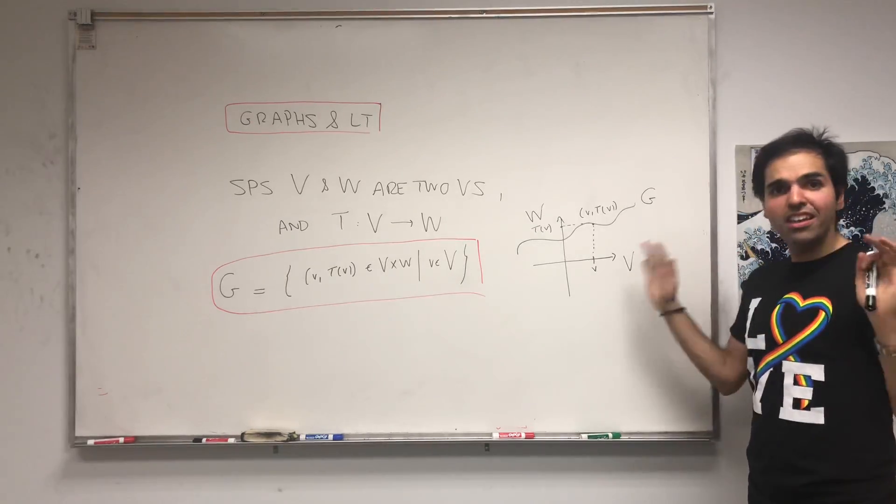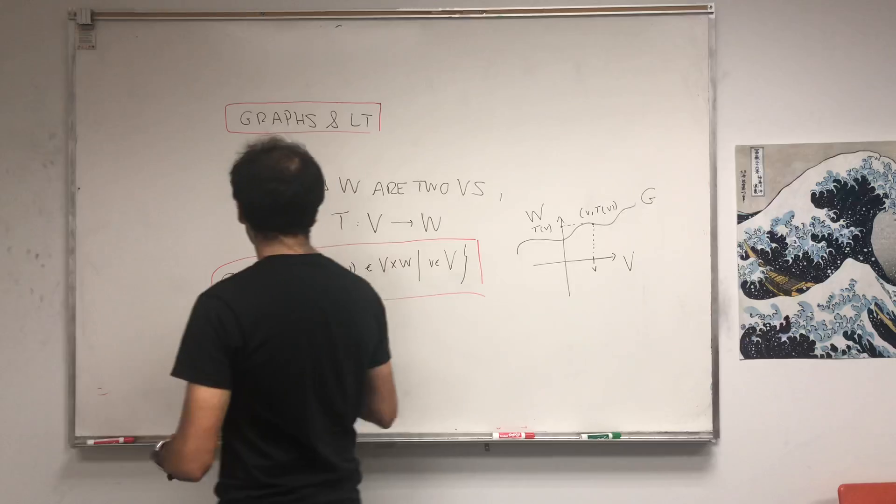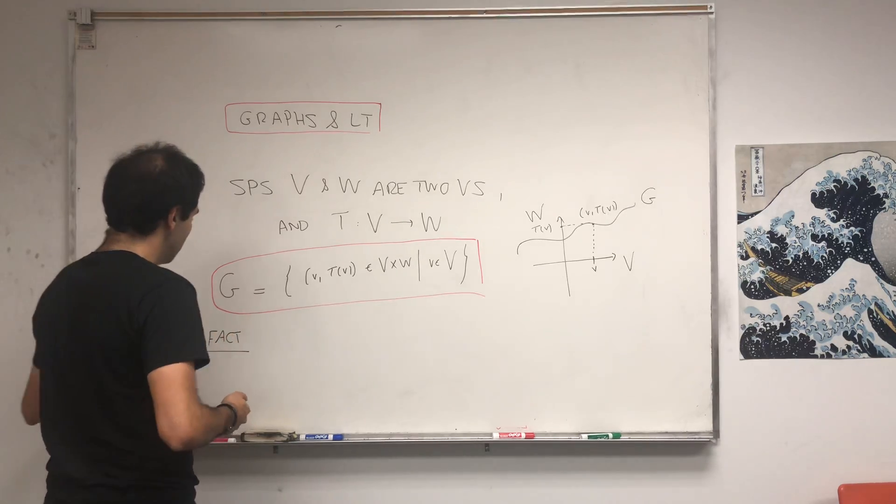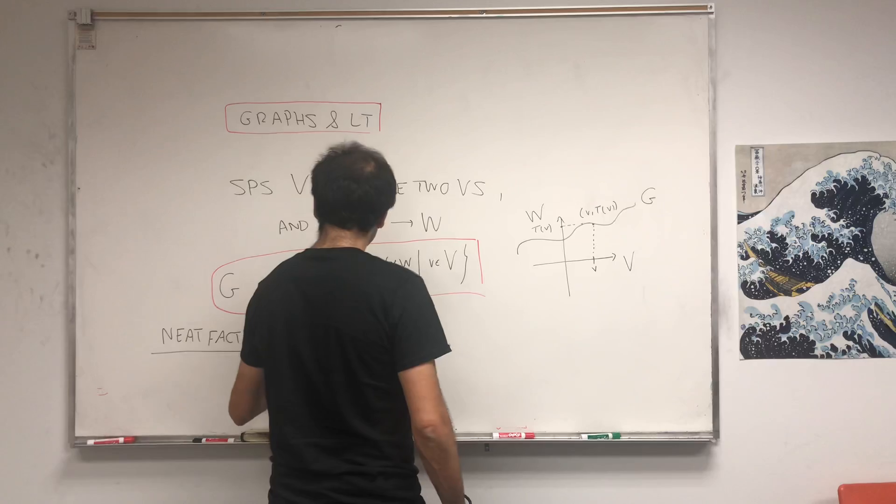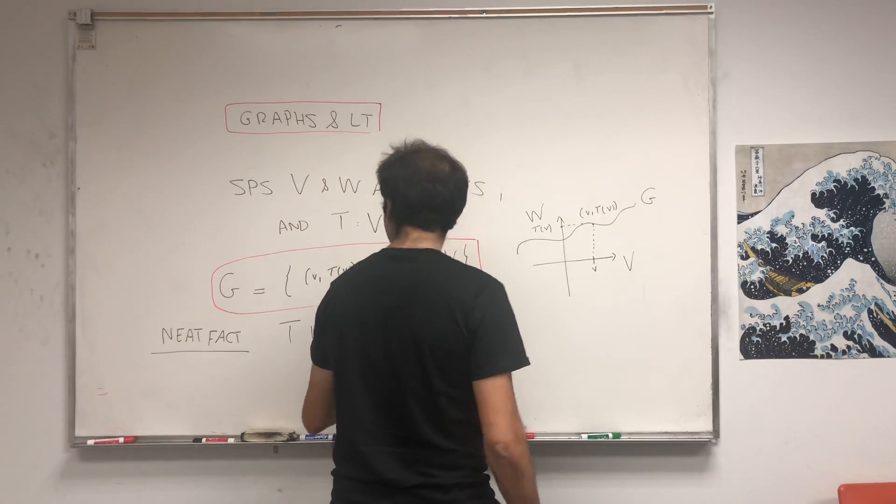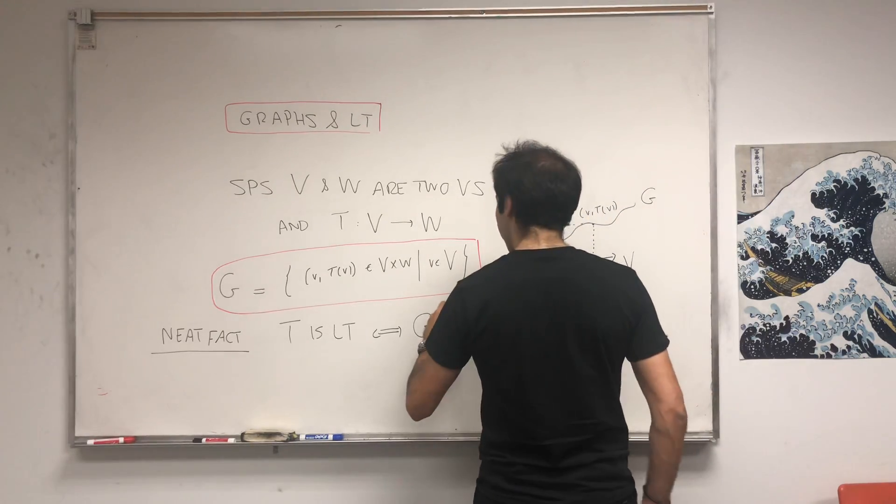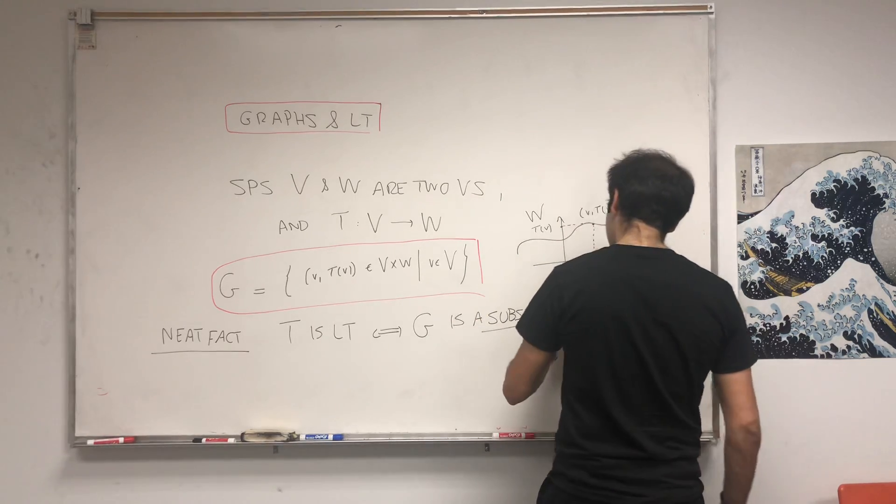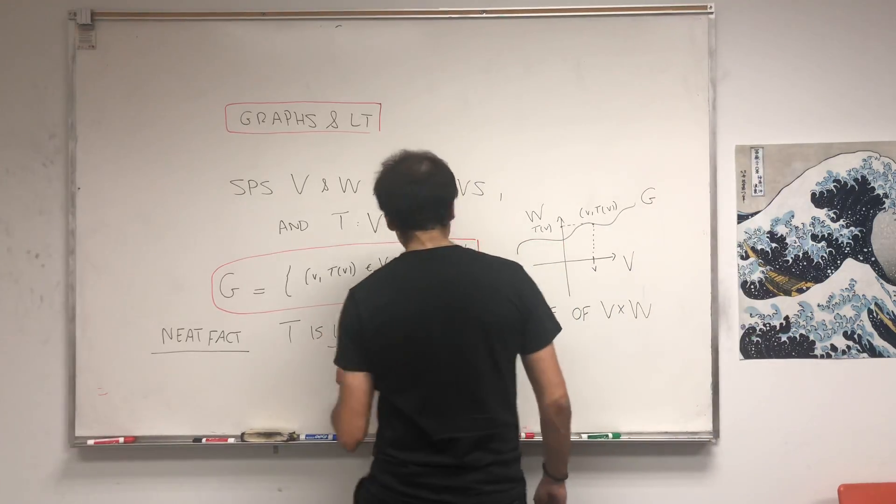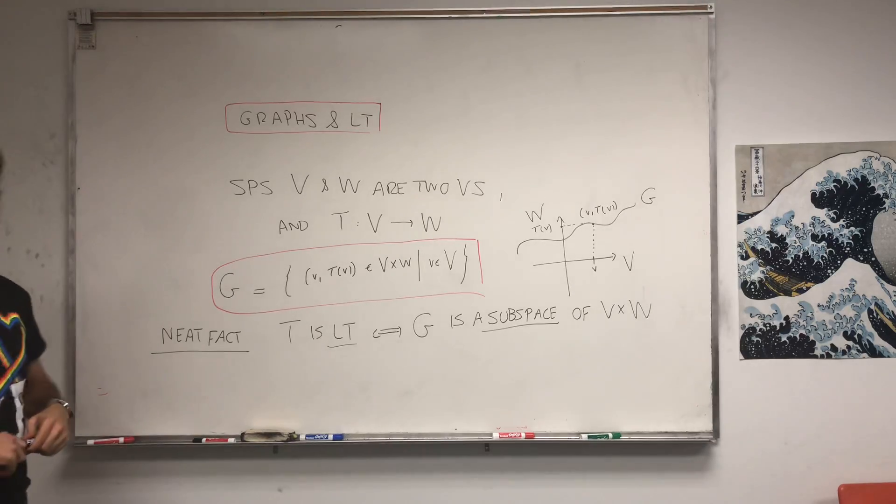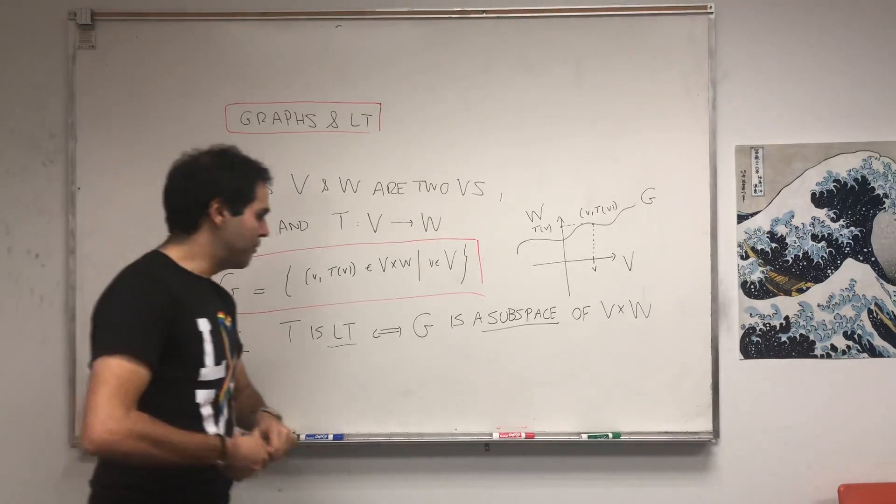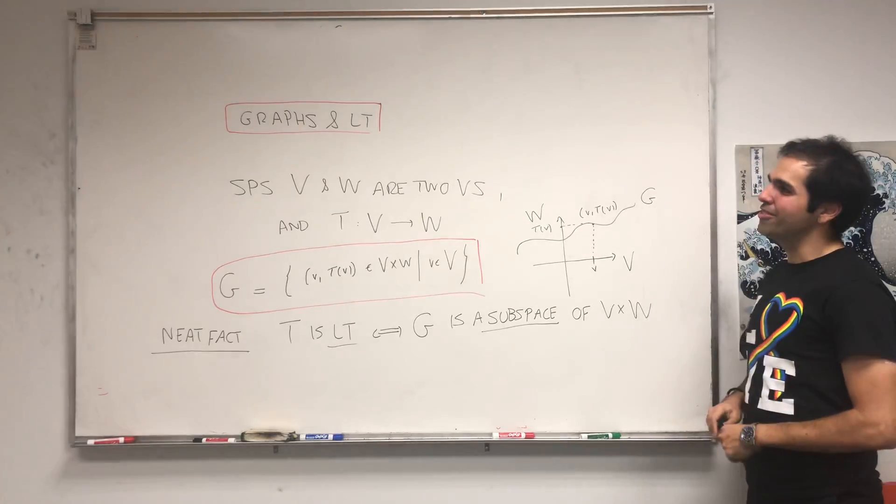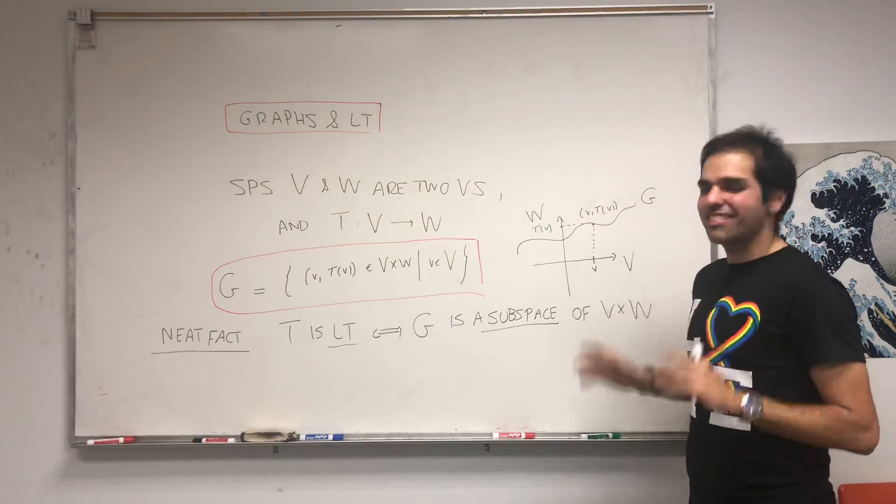But again, we have not assumed yet that T is a linear transformation. Here's a very neat fact which I'll prove today: T is a linear transformation if and only if G is not just a subset of V × W, but a subspace of V × W. It's an amazingly beautiful relationship between linear transformations and subspaces. My professor asked me that when I took linear algebra, and I was too confused at the time. But now looking back, it's a beautiful fact.